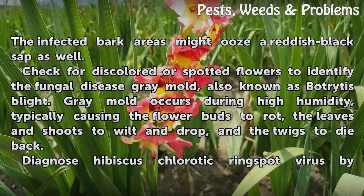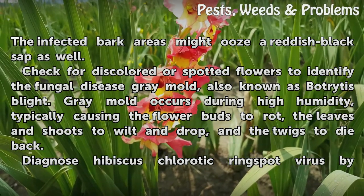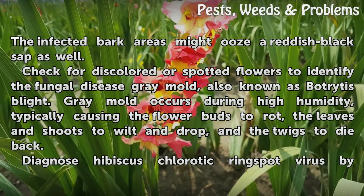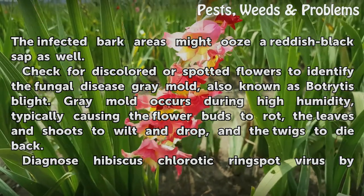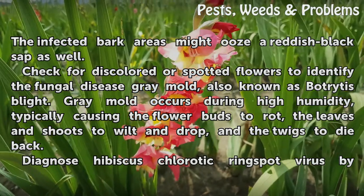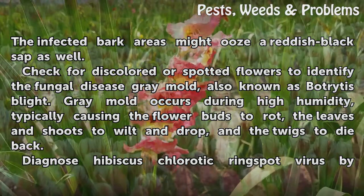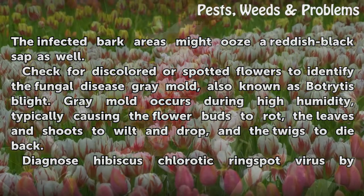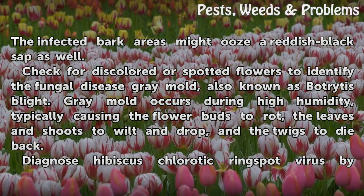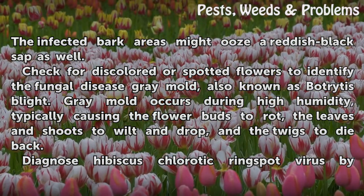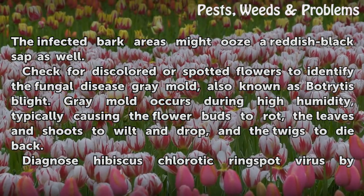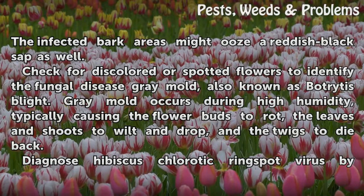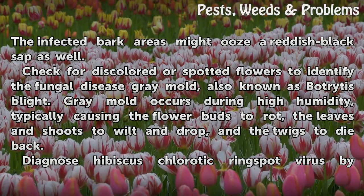Check for discolored or spotted flowers to identify the fungal disease gray mold, also known as Botrytis blight. Gray mold occurs during high humidity, typically causing the flower buds to rot, the leaves and shoots to wilt and drop, and the twigs to die back.